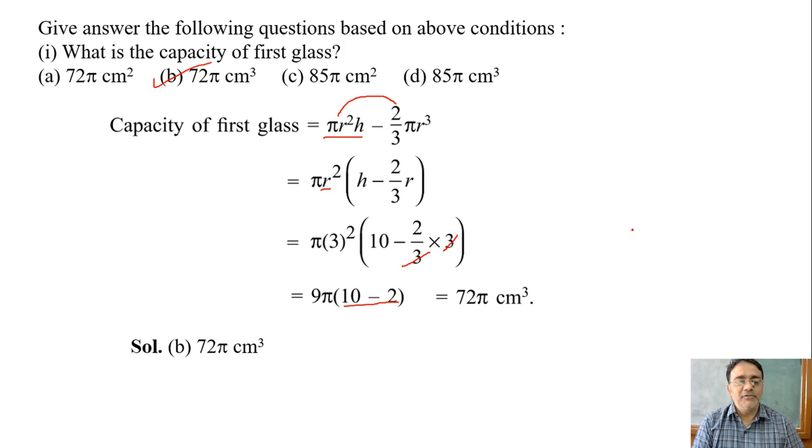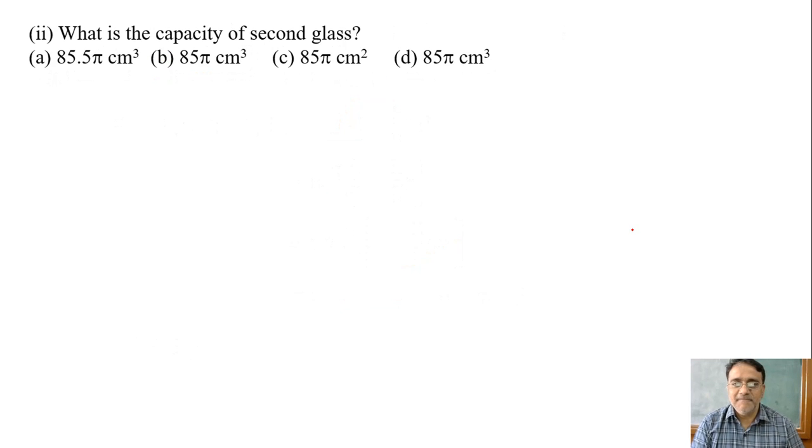Very good. Now we'll move to the second question. What is the capacity of the second glass? How will you find it? Volume of cylinder minus volume of cone. Very good. What is the volume of cone formula? 1/3 πr²h. Both formulas have height, so we will use capital H for cylinder and small h for cone.